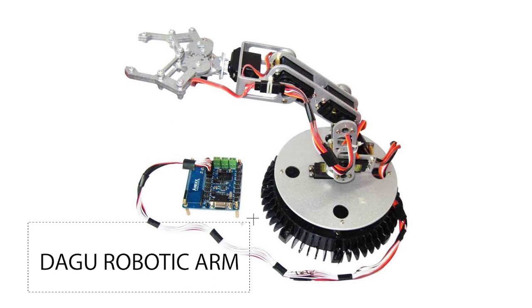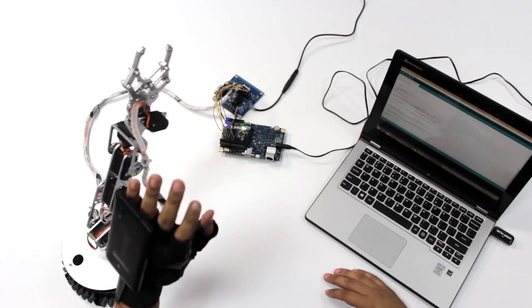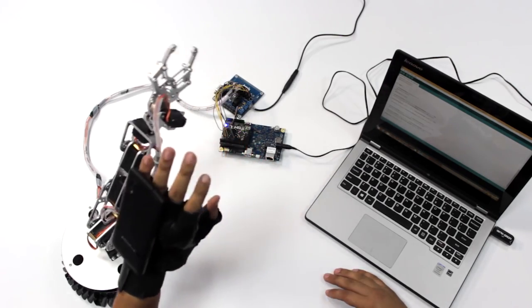Number two, the Dagu Robotic Arm. Although it is not a cheap robotic arm kit, it's my favorite among this list. It is a five degree of freedom robot arm, not of course counting the servo of the grabber, and it's very stable when assembled.